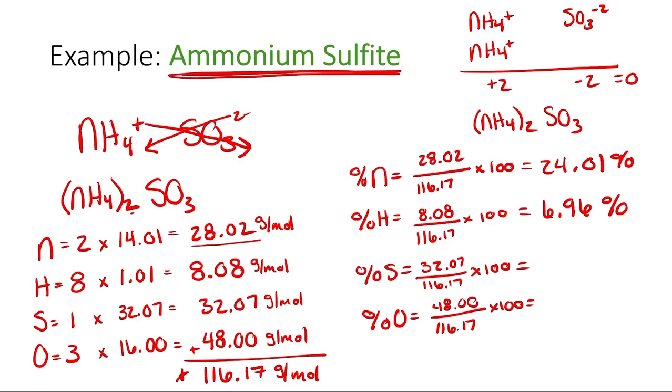And then 32.07 divided by 116.17, that's going to equal 27.61 percent. And then the last one, 48 divided by 116.17, multiply by 100, and I get 41.32 percent.